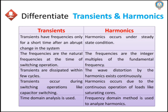Differentiate transients and harmonics. Transients have frequencies only for a short duration of time, whereas harmonics occur under steady-state conditions. The frequencies of transients are natural frequencies, while frequencies of harmonics are integral multiples of the fundamental frequency. Transients dissipate within a few cycles, whereas harmonics exist in the system continuously. Transients occur due to switching operations of capacitors, while harmonics occur due to continuous operation of non-linear loads. Transients are analyzed by time domain analysis, whereas harmonics are analyzed by frequency domain methods.